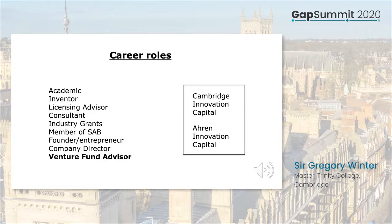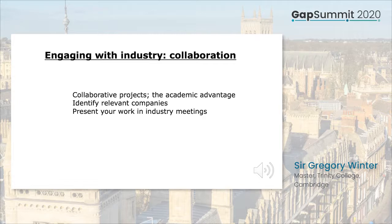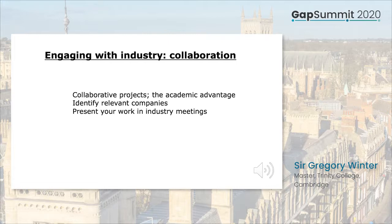Let's assume you've done research with practical implications and want to find an industrial partner. First, consider developing a collaborative project — academia is often better at research than large companies, and it can make economic sense for a company to subcontract research with no long-term staff commitments. Second, identify the companies already engaged in the area. Third, present your work at industry meetings, get yourself invited to talk at their external seminar programmes, and attend the sort of conferences where industry goes.